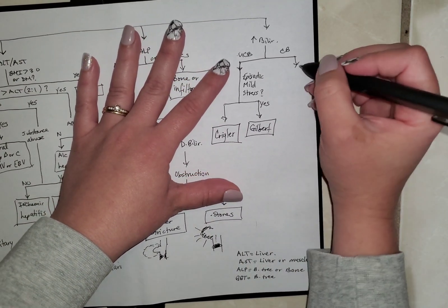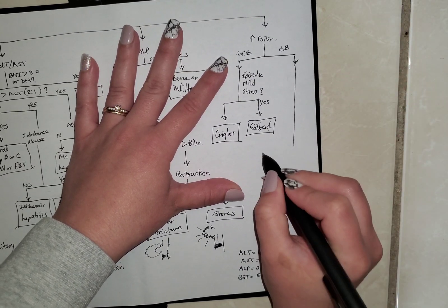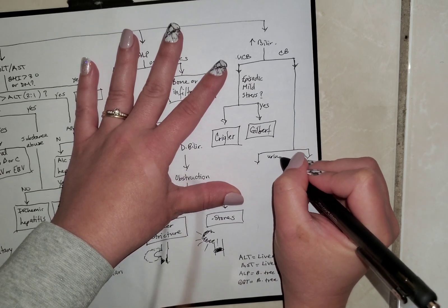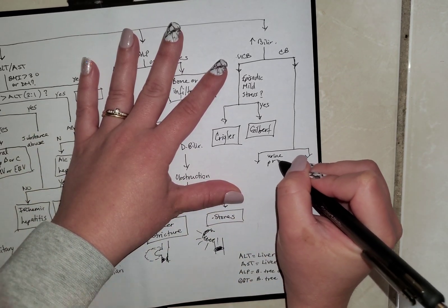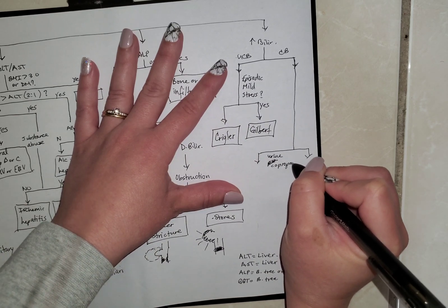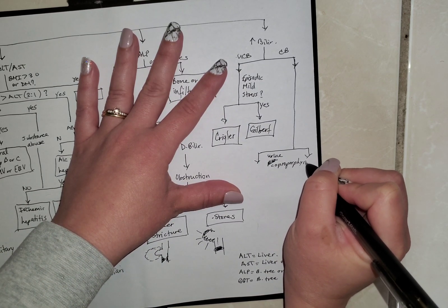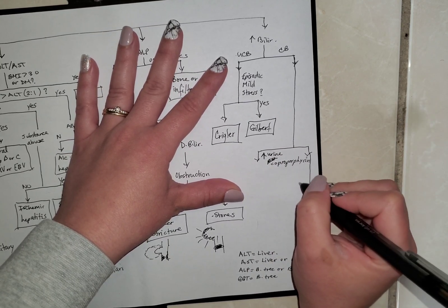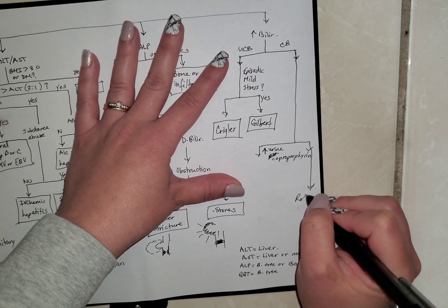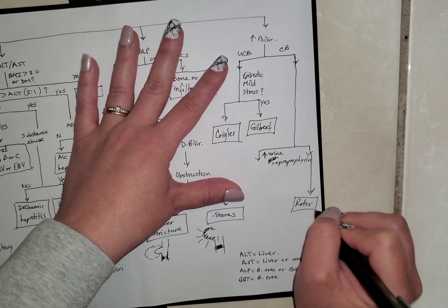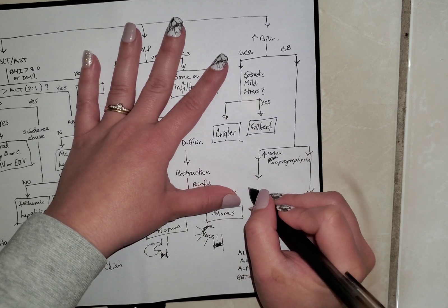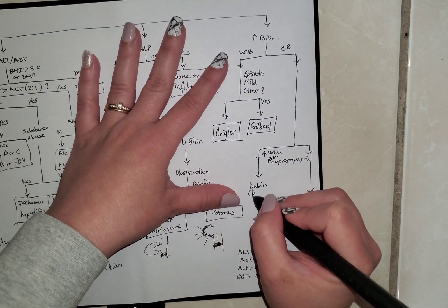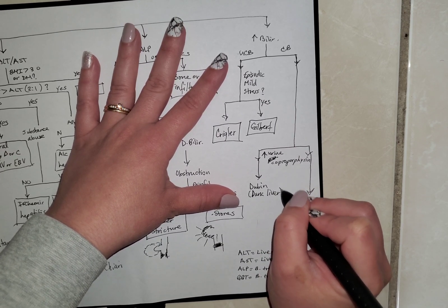And then, if you have conjugated bilirubin, we're going to have to look at the urine coproporphyrin. If it's elevated, we are looking at Rotor syndrome. If it is not elevated, we're looking at Dubin-Johnson. And remember, Dubin-Johnson's going to have a dark liver. So they might mention that too.